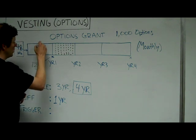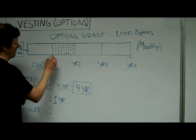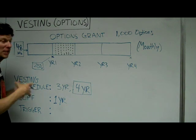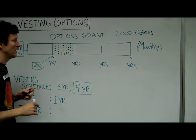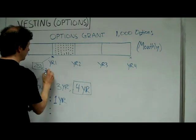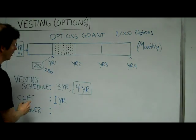You would normally have accrued 25% by this point. When you have a cliff, you're not accruing those until the one-year anniversary of your employment, in which case you get all 25% at one time. For this example, you would get 250 options right here.